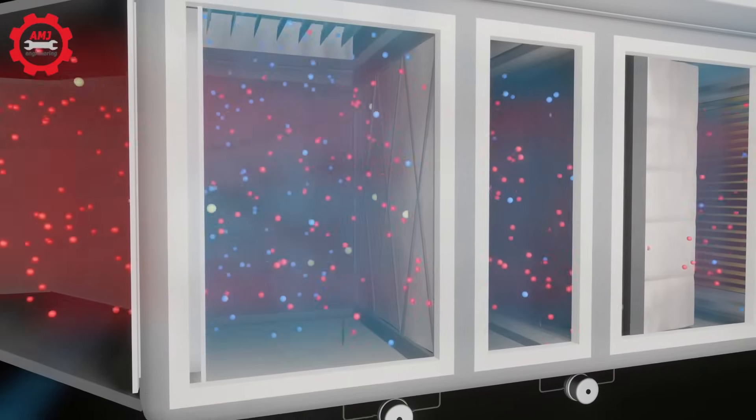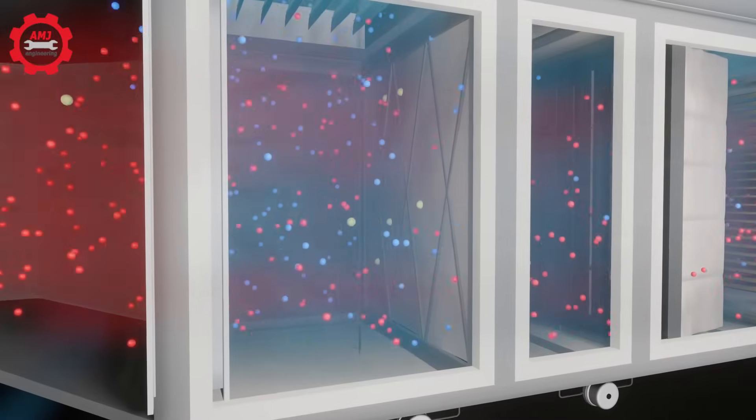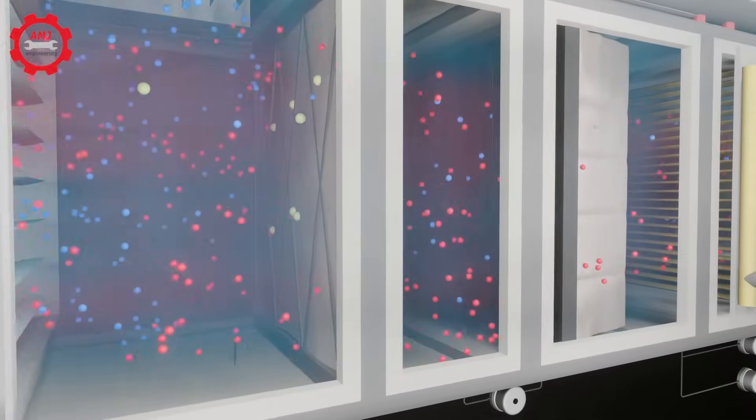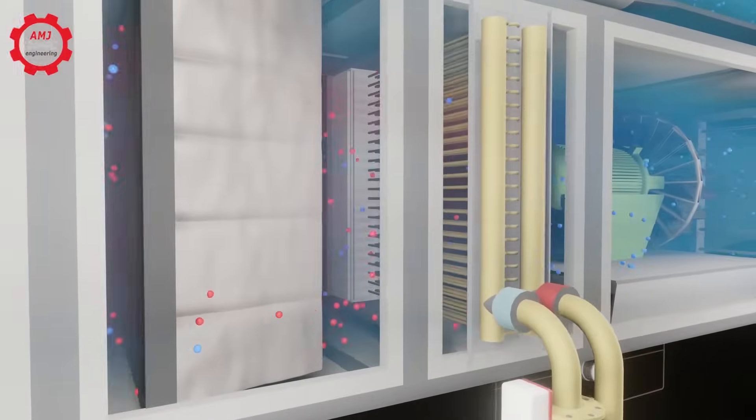The return air and outside air both come into a part of the AHU called a mixing plenum. The mixing plenum is a compartment where the two air flows mix together before passing through the rest of the air handler.